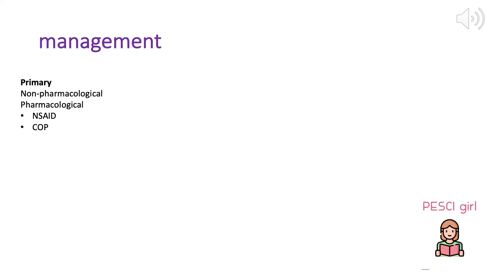For primary dysmenorrhea, we start with non-pharmacological management. We can offer a heat pad or hot water bottle on the lower back and abdomen, a gentle massage, and advise avoiding caffeine, smoking, and alcohol. Maintaining good sleep hygiene, relaxation techniques, and regular exercise can really help in decreasing the pain.